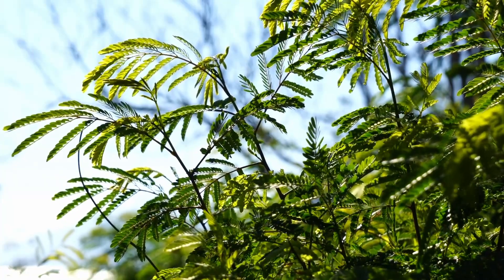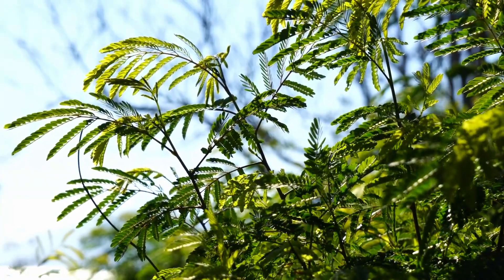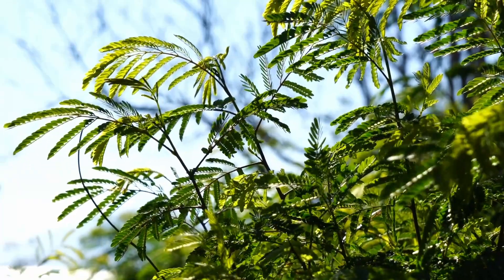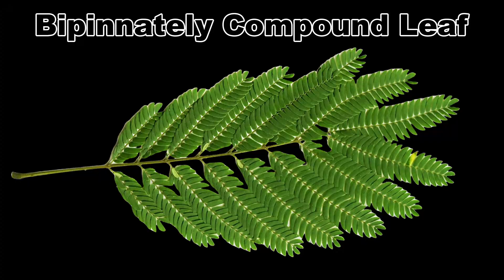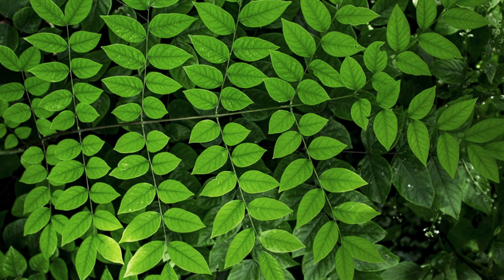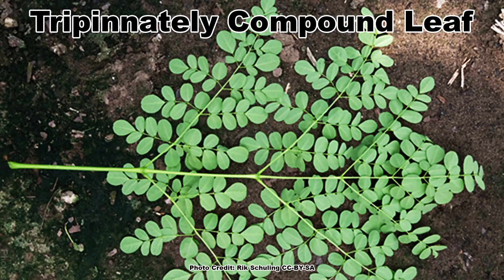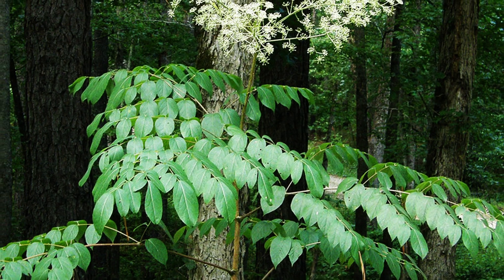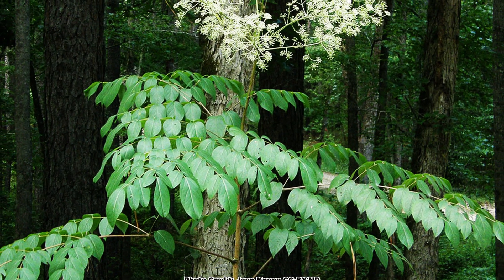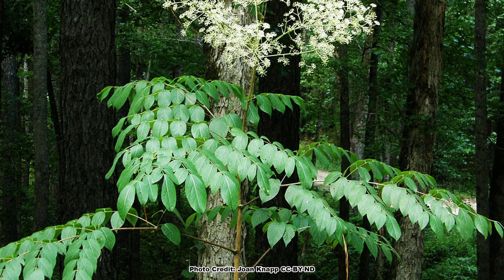Pinnately compound leaves of some species can have branches coming off the rachis on which the leaflets are attached. These are called bipinnately compound leaves. An example of a native tree with bipinnately compound leaves is the Kentucky coffee tree. Some species can even have branches coming off those branches, giving what are known as tripinnately compound leaves. Devil's walking stick is a native shrub that often has huge tripinnately compound leaves.